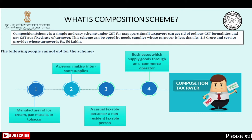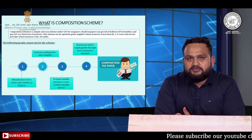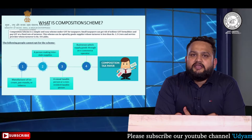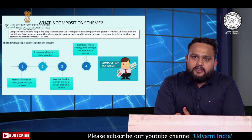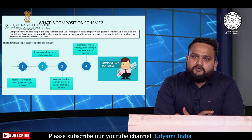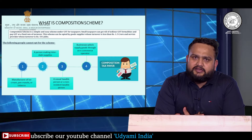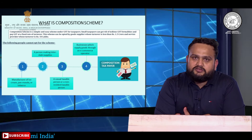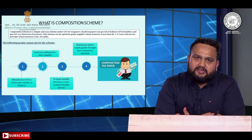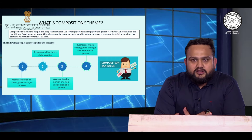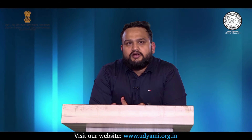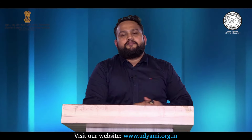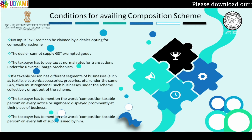Point number four talks about businesses which provide services or supply goods through an e-commerce operator. E-commerce operators include aggregators like Amazon and Flipkart. If I am a seller who lists my products on Amazon and Flipkart and sells through them to consumers, I can't opt for the composition scheme.